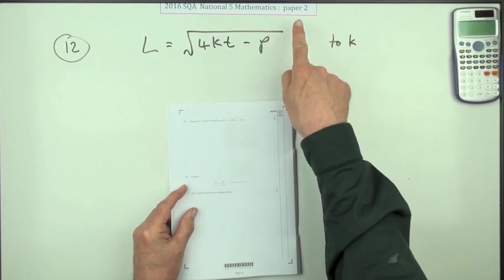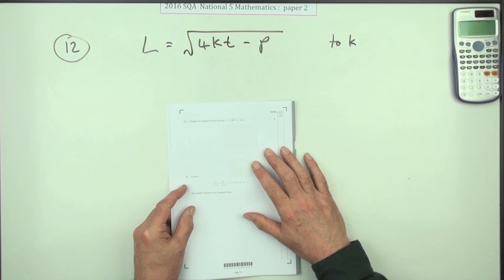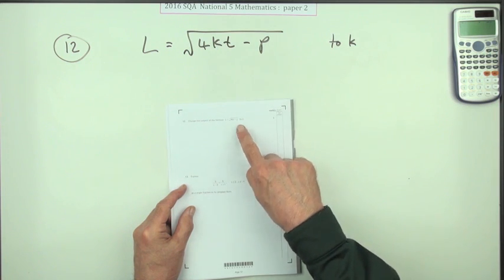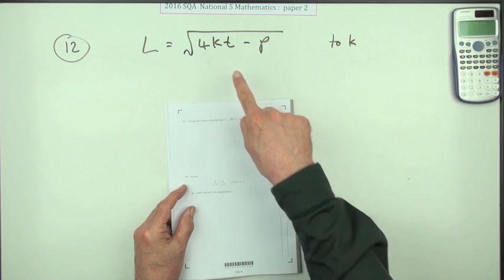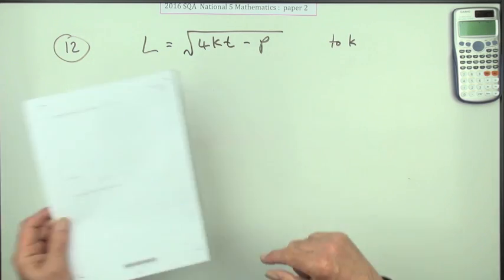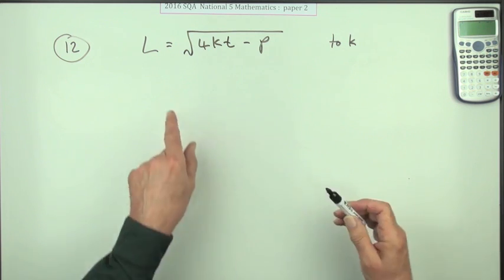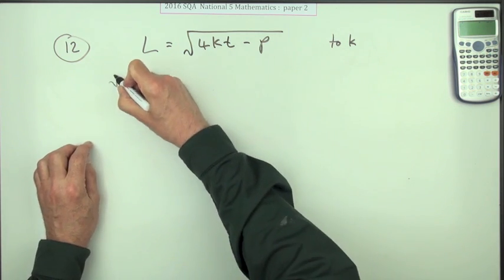Number 12 from paper 2 of the 2016 National 5 Maths. Change the subject of the formula for three marks, change it to K. Well, first thing I'm going to do is reverse that because K is on top anyway.